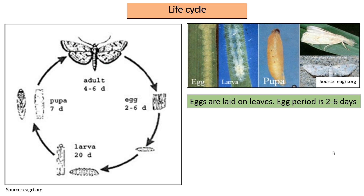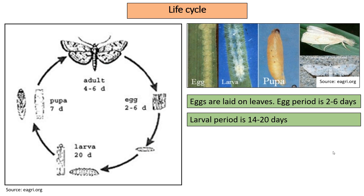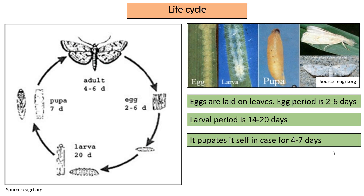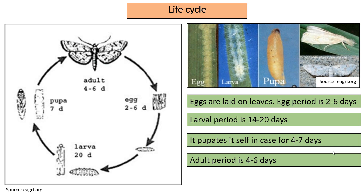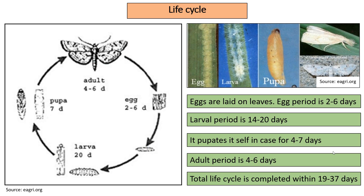Eggs are laid on leaves and last for 2-6 days. Larval period is between 14-20 days. It pupates itself in a case for 4-7 days. Adult period is 4-6 days. The total life cycle is completed within 19-37 days.